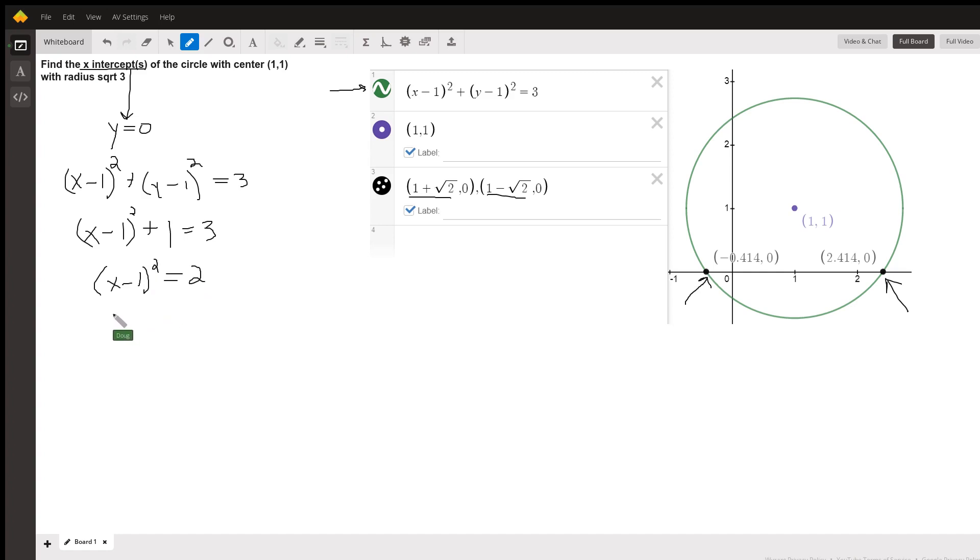Take the square root of both sides. Square root of 2. There's two square roots. Plus or minus the square root of 2.